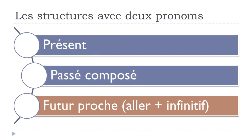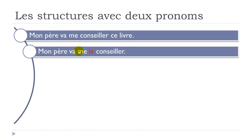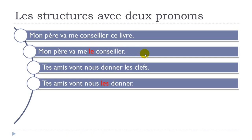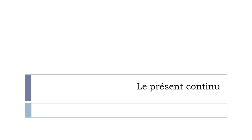At the futur proche with two verbs: mon père va me conseiller ce livre — me and le come before the second verb: mon père va me le conseiller. Tes amis vont nous donner les clés — tes amis vont nous les donner. Je vais me réserver la place de parking — je vais me la réserver. The rule: me/nous first, then le/la/les, before the second verb — the infinitive.